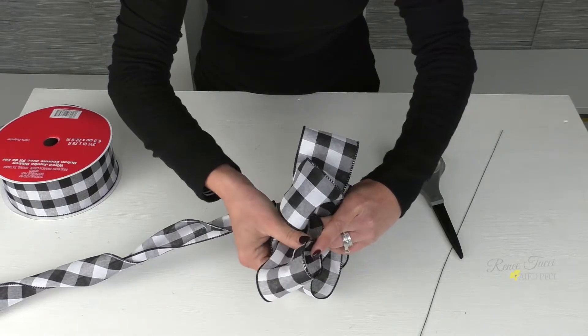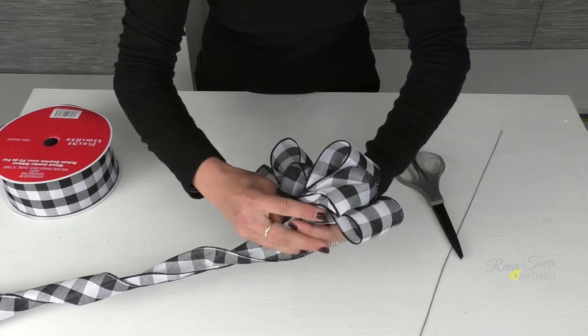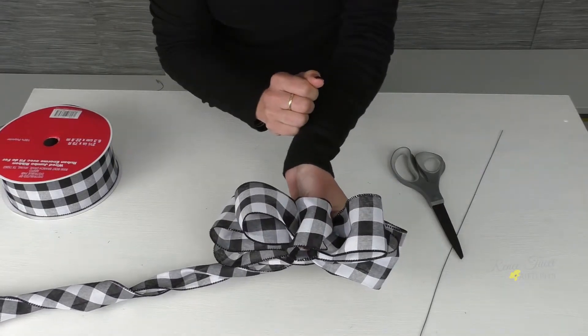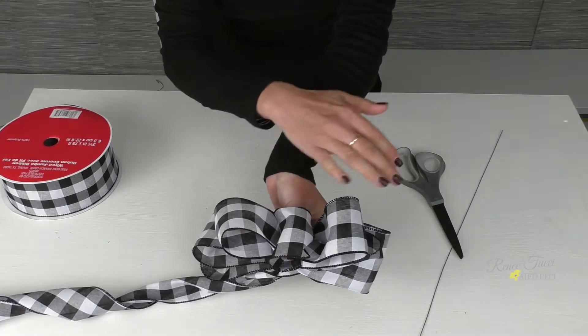Now it doesn't matter if your ribbon gets a little off kilter as you go. Because once you have the wire through, you'll be able to shift and adjust all of your loops so they're right where you want them. So now we've got three loops on each side.